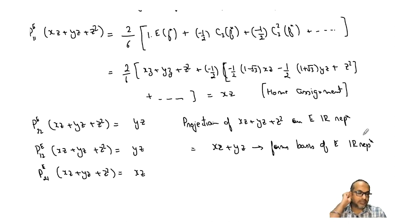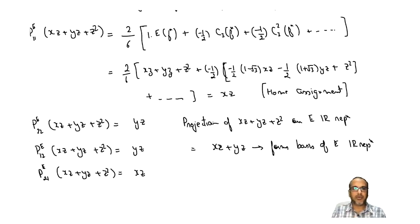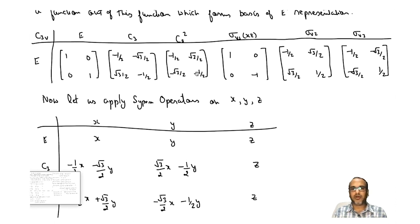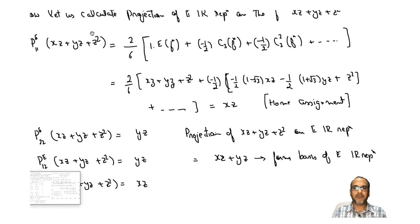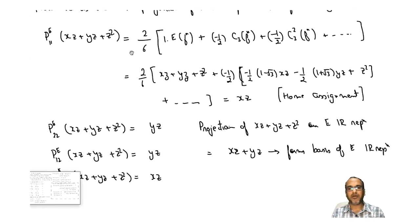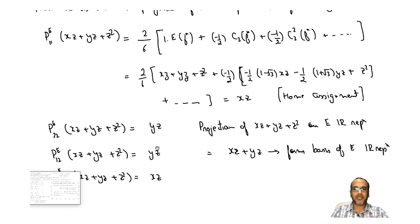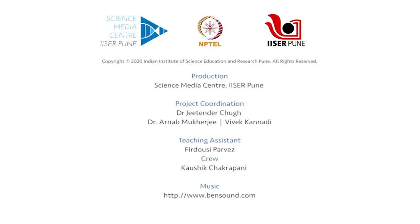That is the job of the projection operator — to extract the part of a function that forms the basis of a given irreducible representation. Here we used full matrix elements, requiring all matrices. When we use the incomplete projection operator, we deal only with traces (characters), making the calculation much simpler. Please complete all the components yourself as an exercise and verify the result. Thank you.